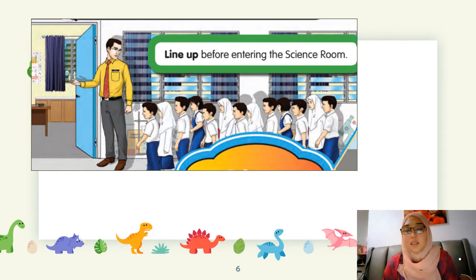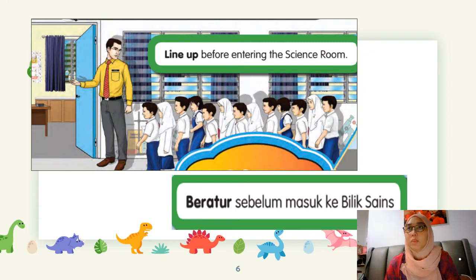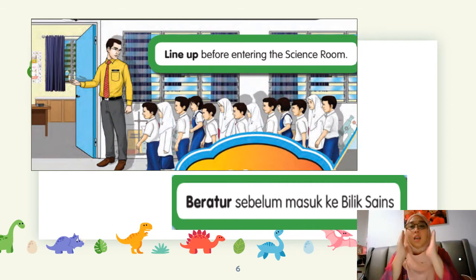The first rule of the science room rules is you have to line up before entering the science room. Kalau dalam bahasa Melayu, beratur sebelum masuk ke bilik sains. Jadi, sebelum awak masuk bilik sains, awak perlu beratur dahulu dan tunggu cikgu datang. Ini adalah peraturan pertama yang murid mesti tahu sebelum memasuki bilik sains — line up before entering the science room.